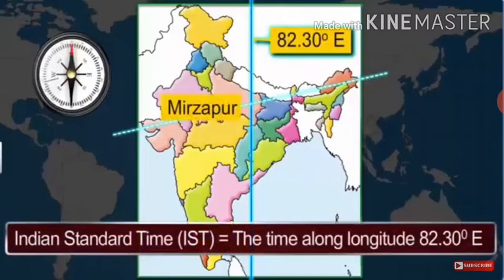This has prevented a lot of confusion and brought harmony in time throughout the country. Since the local time at each longitude is different, India has accepted 82 degrees 30 minutes east as the Indian Standard Meridian.